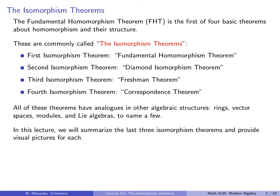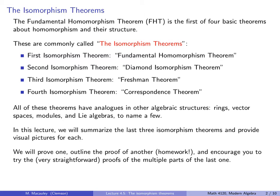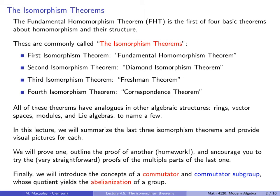In this lecture, we will summarize the last three isomorphism theorems and provide visual pictures for each. We will prove one of them — the third isomorphism theorem. We will outline the proofs of another, namely the second isomorphism theorem, and we will encourage you to try the straightforward proofs of the multiple parts of the last isomorphism theorem. When we are done, we will introduce the concepts of a commutator and of a commutator subgroup whose quotient yields the abelianization of a group. We will conclude with some examples that directly utilize the fourth isomorphism theorem.